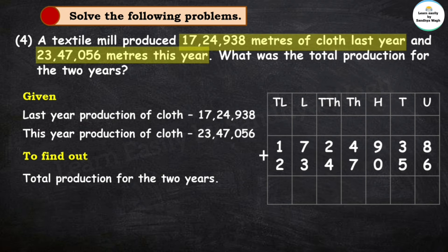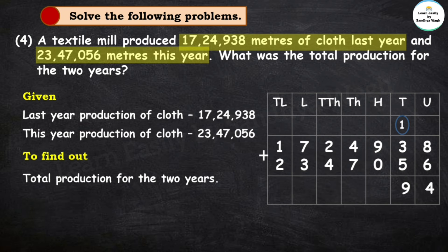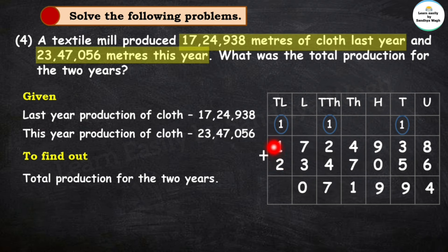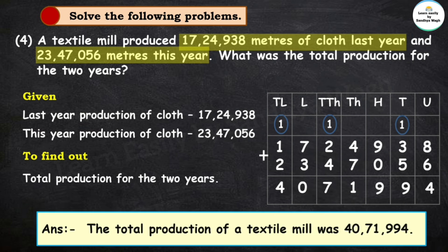Let's add 17,24,938 and 23,47,056. Units place: 8 plus 6 is 14, carry 1. Then 3 plus 5 plus 1 is 9. 9 plus 0 is 9. 4 plus 7 is 11. 2 plus 4 plus carry 1 is 7. 7 plus 3 is 10, write 0 carry 1. 1 plus 2 plus 1 is 4. So the total production of the textile mill was 40,71,994 meters.